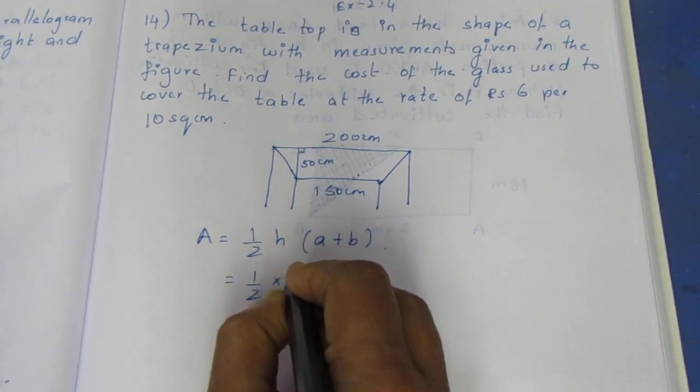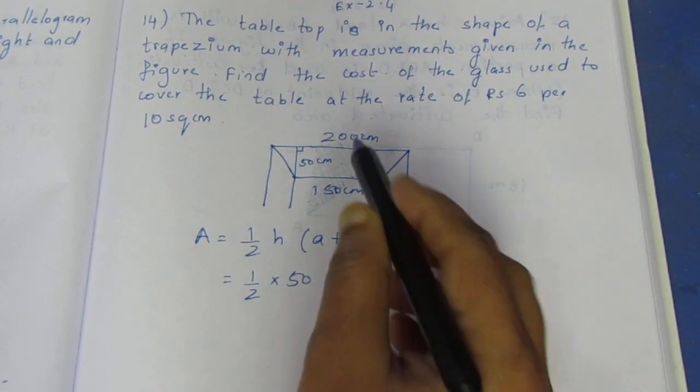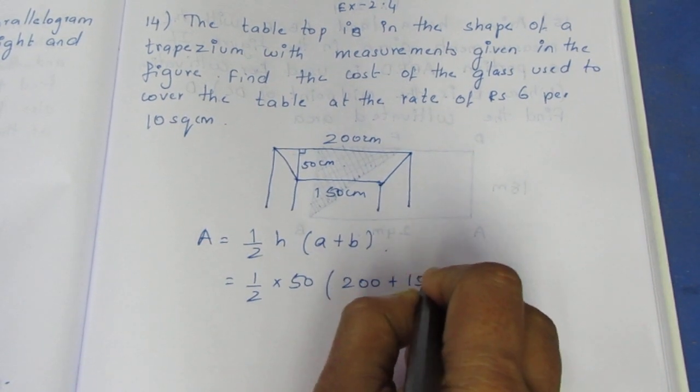Substituting the values: half, height is 50, a plus b are the parallel sides, 200 plus 150. Let me simplify this.